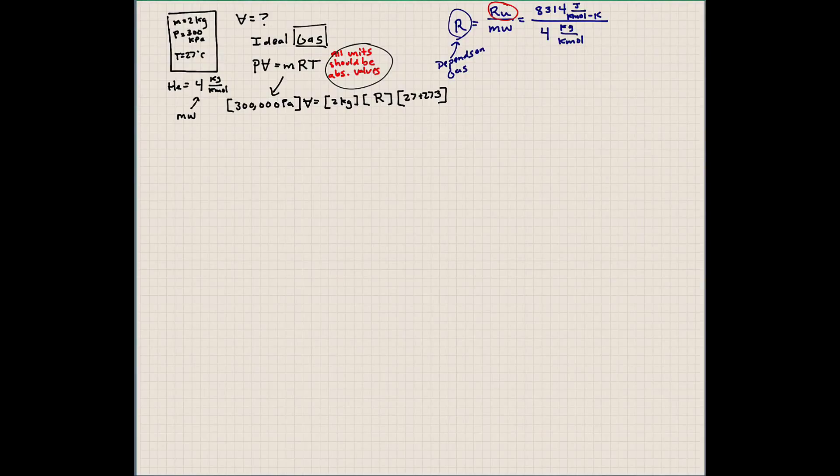In this equation, our kilomoles cancel. And we're left with our R value, which we can plug in here. Our R value is going to be 8314 divided by 4. In this equation, we can solve for the volume. And what you will find out is that the volume in this tank is 4.154 meters cubed. That's one application that we've used for using the ideal gas equation.